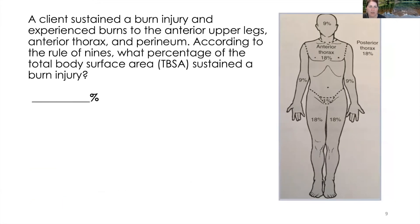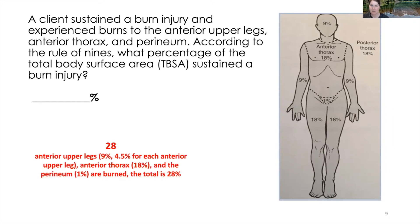Next question: A client sustained burns to the anterior upper legs, the anterior thorax, and the perineum. What is the TBSA? Each anterior upper leg is four and a half percent, and with both legs that's 9%. The anterior thorax is 18%. The perineum is 1%. Therefore, total TBSA is 28%.